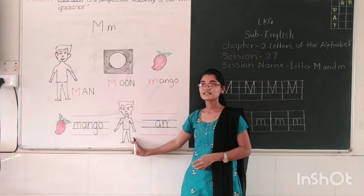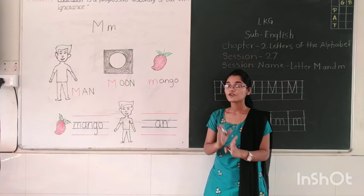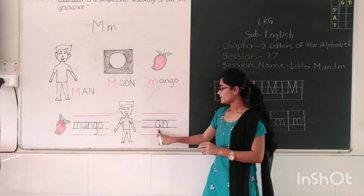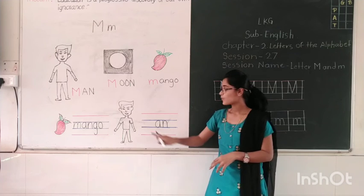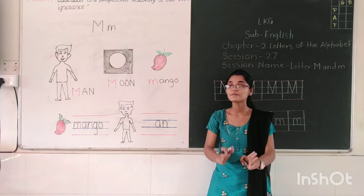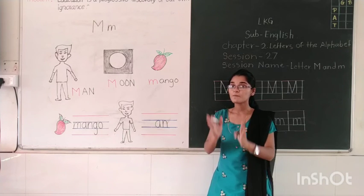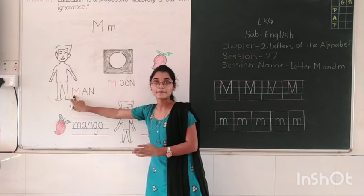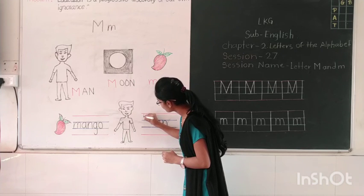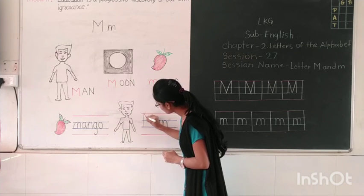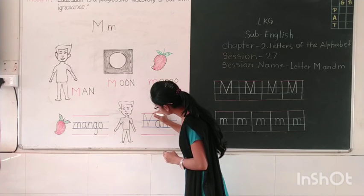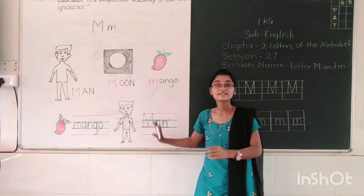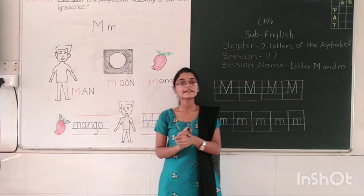Next, which picture is this? This is the picture of a man. And what is the spelling of man? M-A-N, man. Here only two letters A-N are given and one letter is missing. The spelling of man starts from which letter? Letter M. So here I am going to write capital M. You have to complete the spellings also. Now I am going to show you your English textbook.